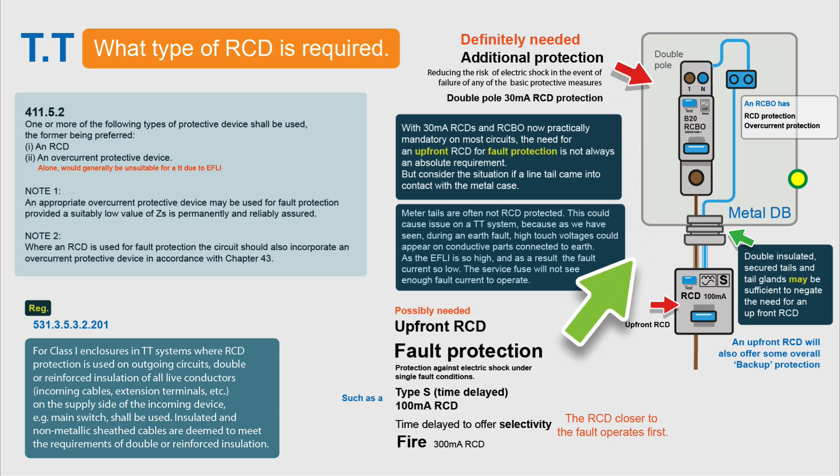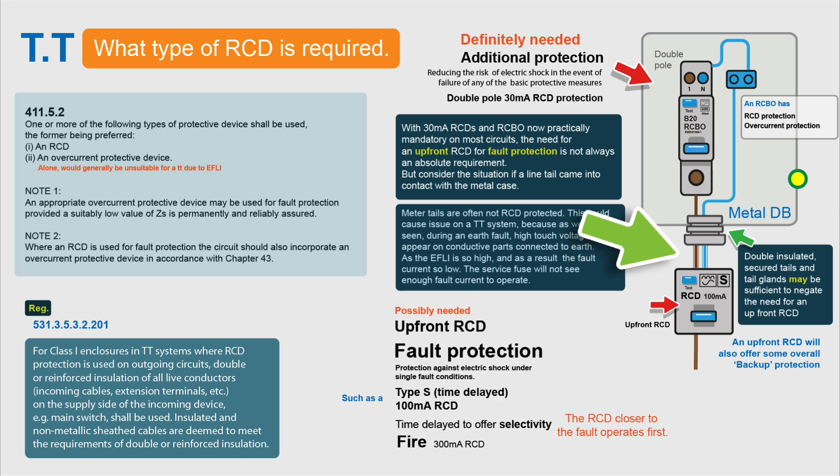Something to bear in mind is that if the consumer unit or distribution board is made of metal, there is potential for it to become live during a fault. We know the overcurrent protective devices won't operate because it's a TT system, and if there's no RCD that case could just sit there live. But there's guidance that if the meter tails coming into the consumer unit are in a proper gland, are double insulated, and are secured, there's very little chance of those tails becoming damaged and energising the consumer unit. So up-front fault protection is not necessarily required, but what's definitely needed is the additional protection for the outgoing circuits. The up-front RCD does provide some overall backup protection, but it depends on the installation what is required. That's your TT system — I hope it's been of some interest, and thanks for watching.